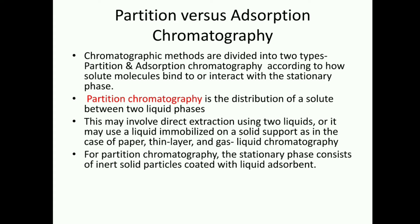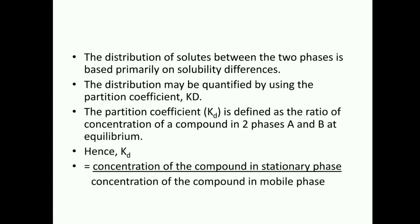For partition chromatography, the stationary phase consists of inert solid particles coated with a liquid adsorbent, and the distribution of solutes between the two phases is based primarily on solubility differences. This is quantified by the partition coefficient Kd, defined as the ratio of concentration of a compound in the stationary phase divided by its concentration in the mobile phase at equilibrium: Kd = [stationary phase] / [mobile phase].